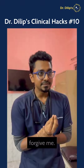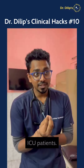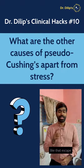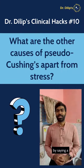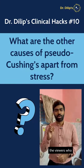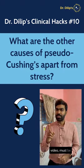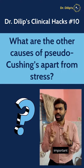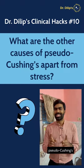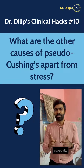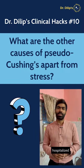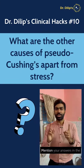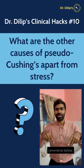But please forgive me — I did cortisol for two other ICU patients as well. You cannot just escape by saying a simple thank you. You, along with the viewers watching this video, must be able to answer this question. I told you the most important reason for pseudo-Cushing's is stress, especially in hospitalized patients. What are the other important causes of pseudo-Cushing's? Make sure to answer in the comments below.